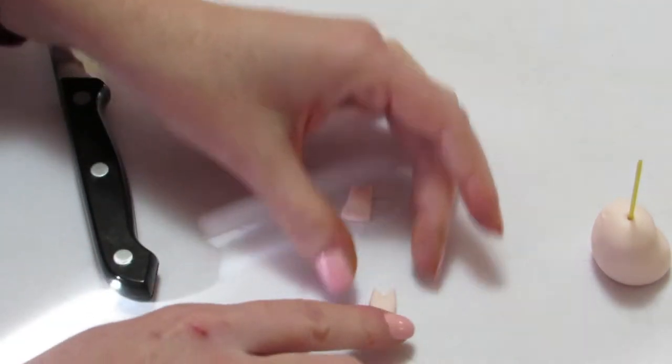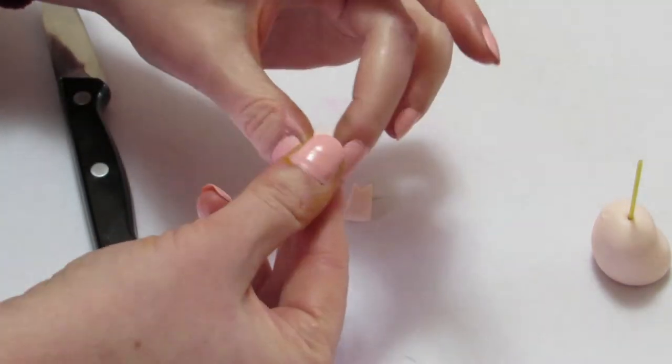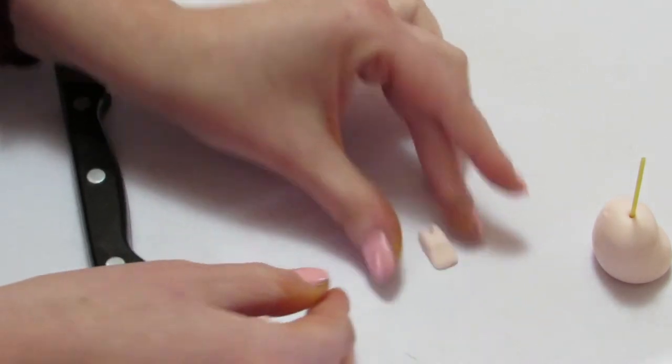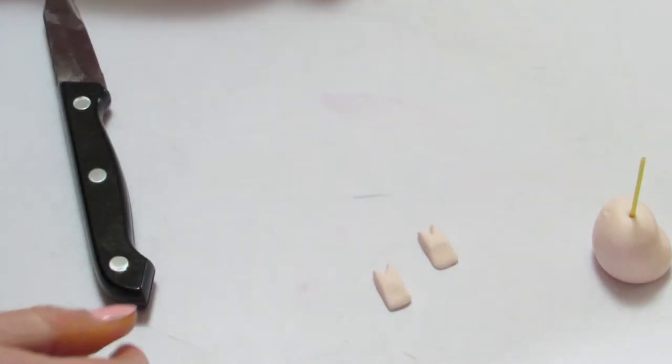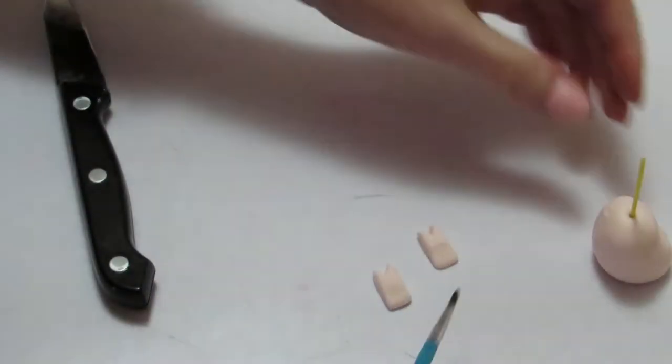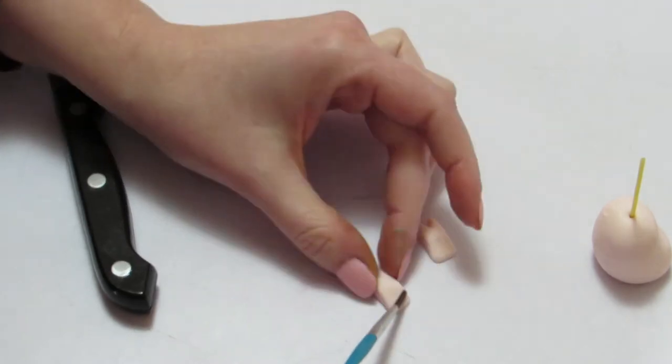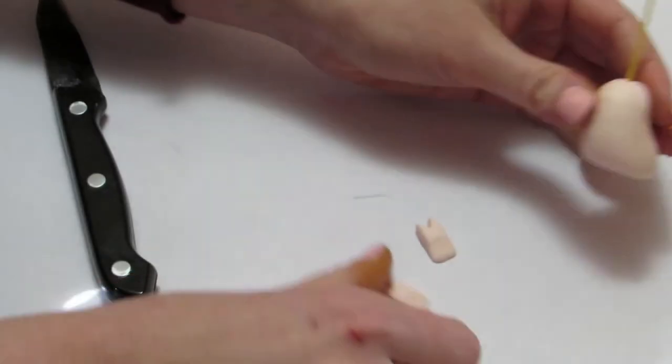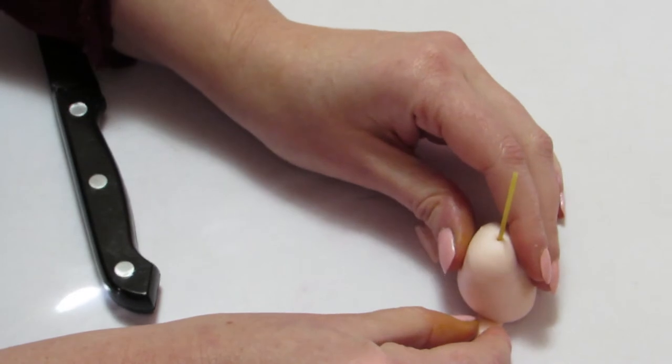And I smoosh down on the back edge there, and that's where we're going to tuck it under his butt. So, I'm going to get some water on my paintbrush. I have a little paintbrush, it's nothing special. Paint a little bit of water onto it, and then just set his rump right on top of him.